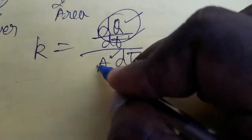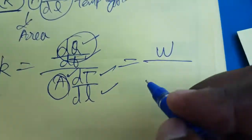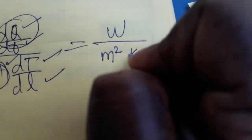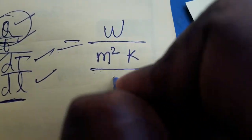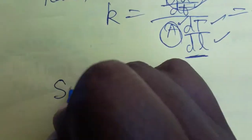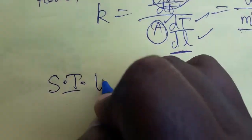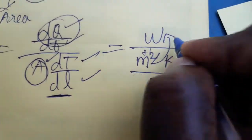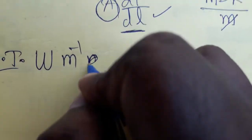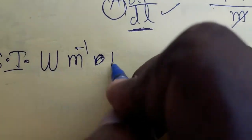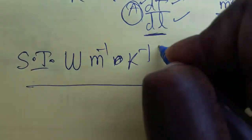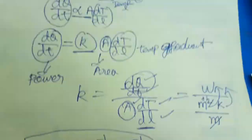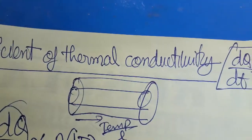For the SI unit: dQ/dt is heat over time, which together we take as watt. Area is length × breadth, which is meter squared. Temperature is in kelvin, and length is in meter. So the meter in the denominator and meter squared partially cancel, giving: the SI unit of coefficient of thermal conductivity is watt × meter⁻¹ × kelvin⁻¹.